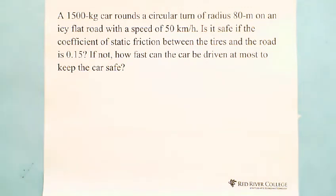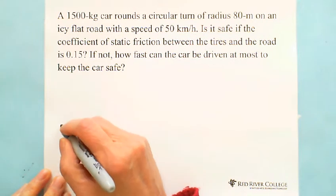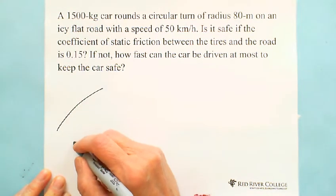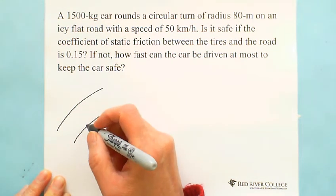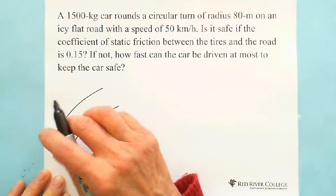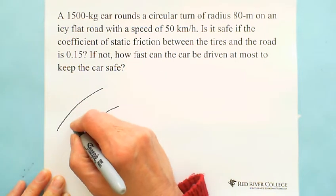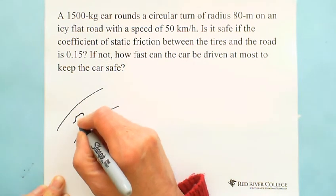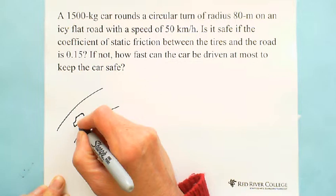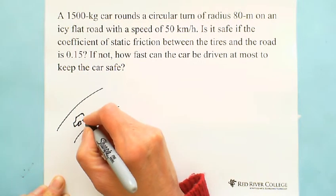So this question is talking about a car going around a circular turn. Let's first draw a free body diagram. For example, this is a circular turn, circular road, and a car here.